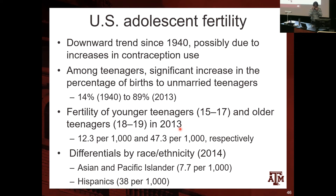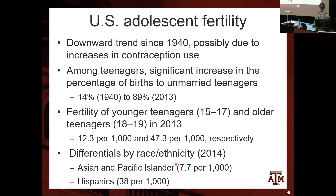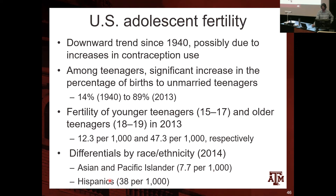When talking about socioeconomic and demographic indicators, it's always good to do this analysis disaggregated by race and ethnicity. Adolescent fertility is much lower among Asians and Pacific Islanders — 7.7 per 1,000 women between ages 15 and 19 — compared to 38 births per 1,000 among Hispanic teenagers.